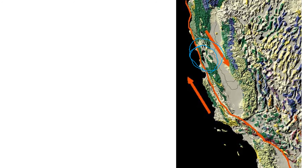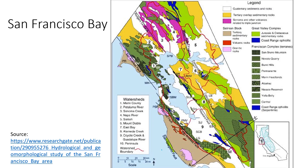This area down here — Baja California — is included in this. It's part of that same block and it's currently sliding up the same way as the rest of California. It will be moving past this part of California in some distant part of the future.